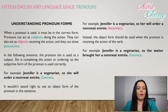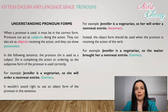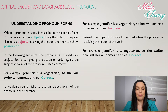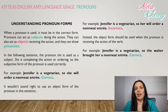It wouldn't sound right to use an object form of the pronoun in this sentence. For example: Jennifer is a vegetarian, so her will order a non-meat entree. It doesn't sound right — it's incorrect. Instead, the object form should be used when the pronoun is receiving the action of the verb. For example: Jennifer is a vegetarian, so the waiter brought her a non-meat entree. That sounds much better.